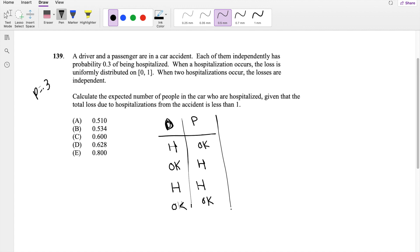And so if, let's say, driver is hospitalized and the passenger is okay, the probability that the driver is going to be hospitalized is 0.3, and the probability that the passenger is okay is just 1 minus 0.3, so that's 0.7.